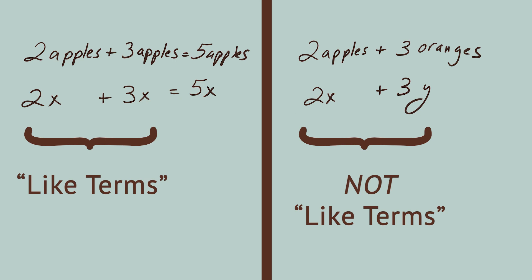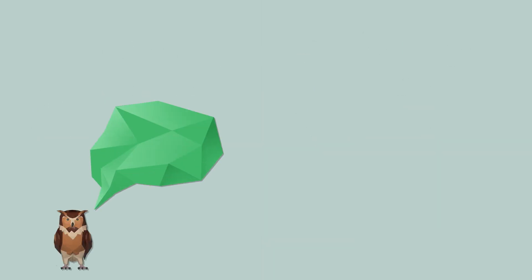This problem combines linear expressions. Each variable part is only raised to the first power — for instance, 2x, not 2x squared. In a future video, we'll work through examples with expressions raised to different powers. Be sure to sign up to join our algebra class so we can let you know when that video is released.